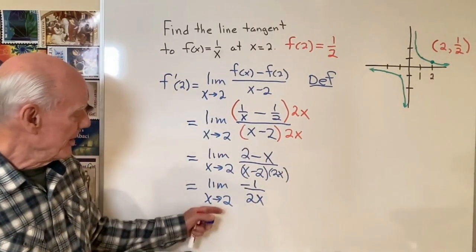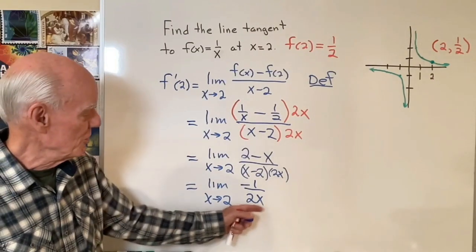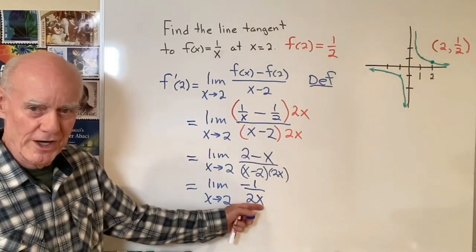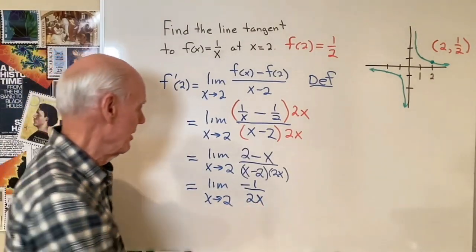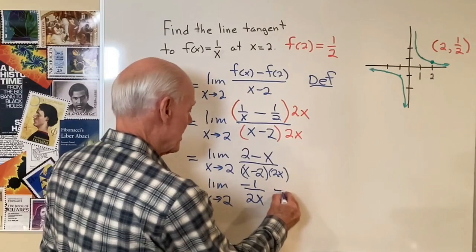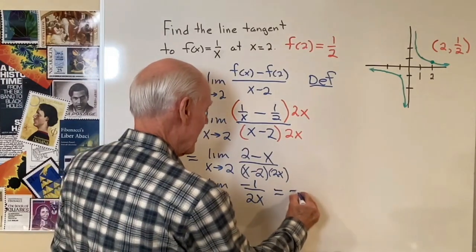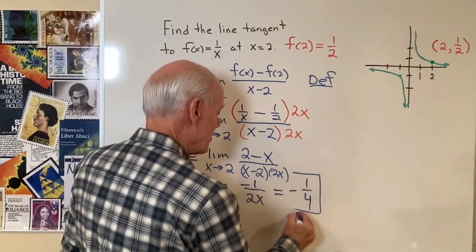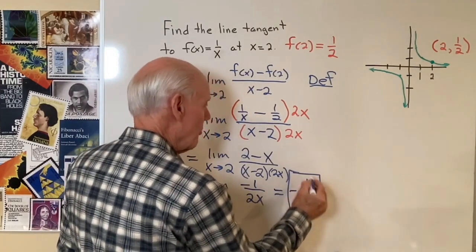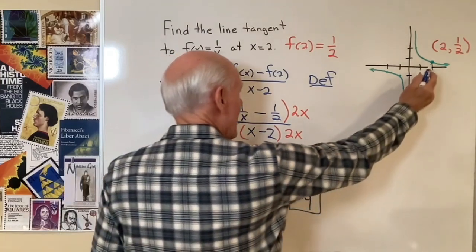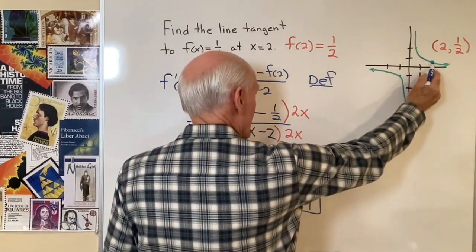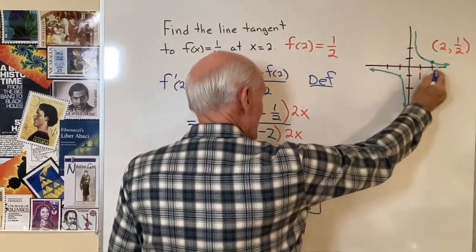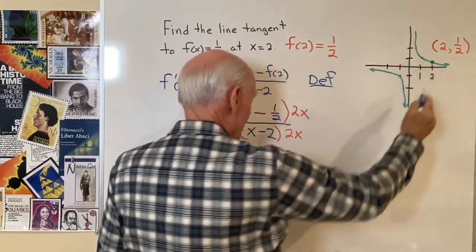Now I can take the limit. As x goes to 2, this goes to 4 in the denominator, so this becomes negative 1 fourth. And that's going to be the slope of the line tangent to this graph at that point.